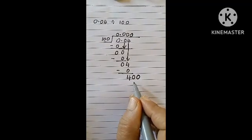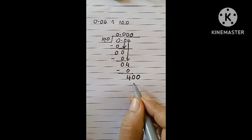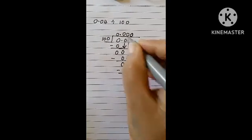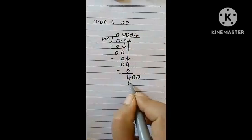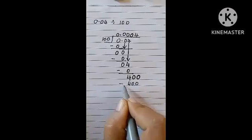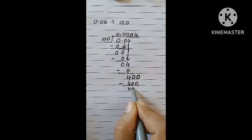So, now you have 400. So, how many times does 400 go by 100? 4. 100 times 4 is 400. And you subtract and you get the remainder 0.